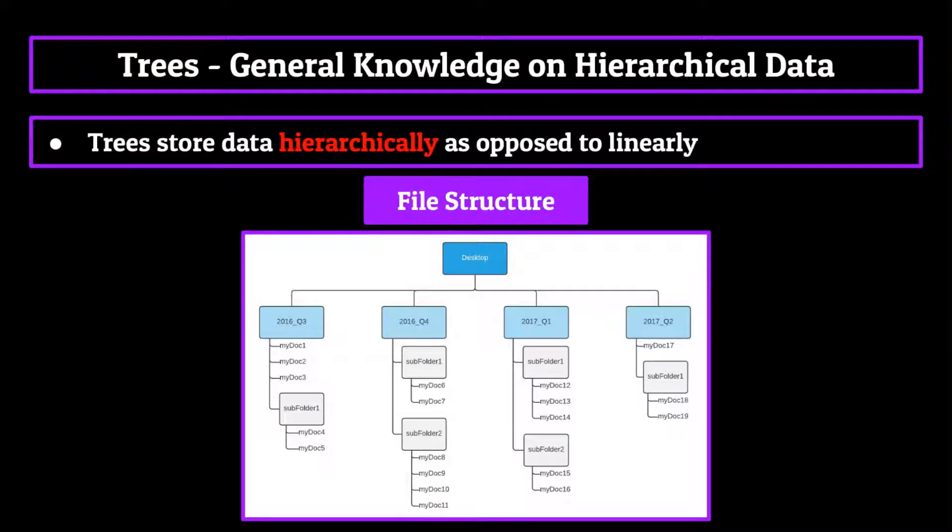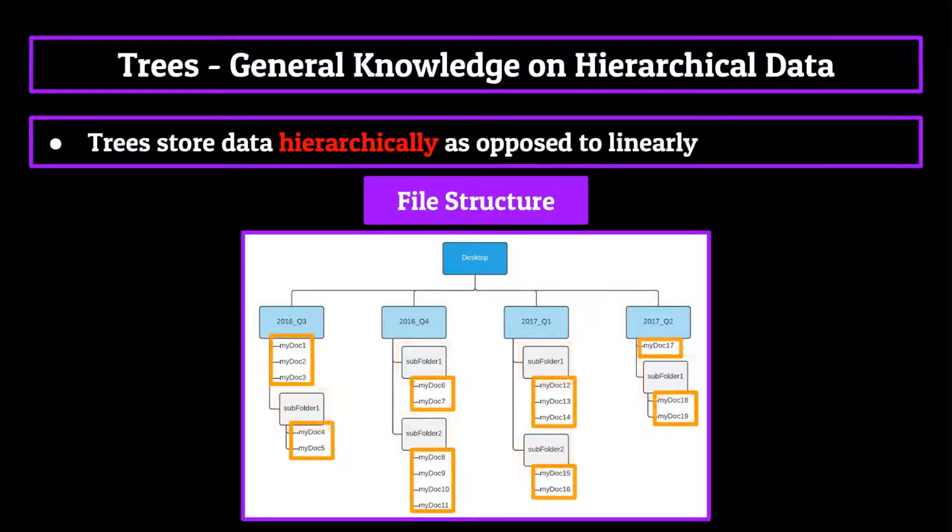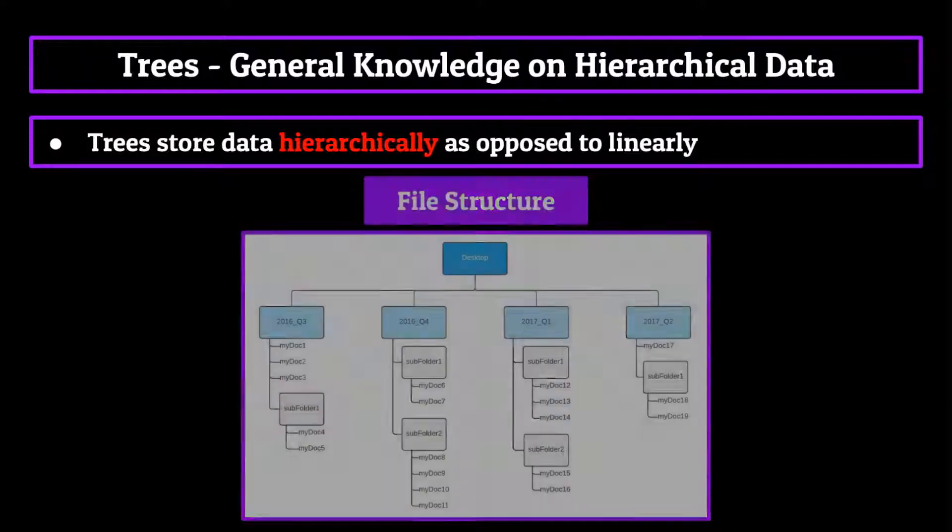Another example could be a file structure on your computer. You'd have a base folder such as your desktop, and then inside of that, you might have multiple other folders for types of information. And at the end of the line, you'd have your files. Again, it sets up a network of these files on different levels, just like how we had with the family tree.